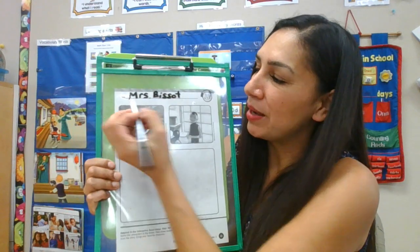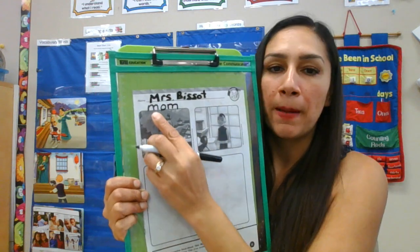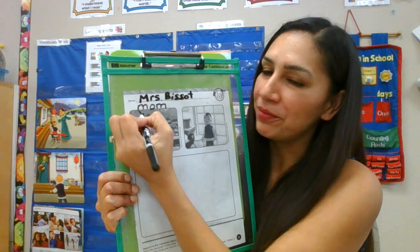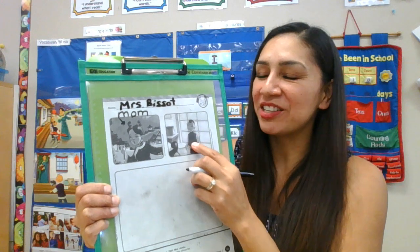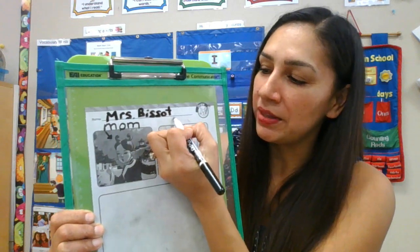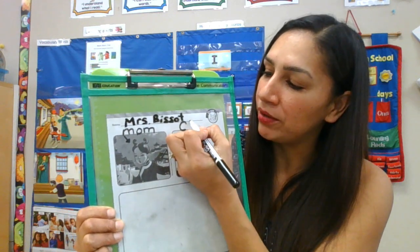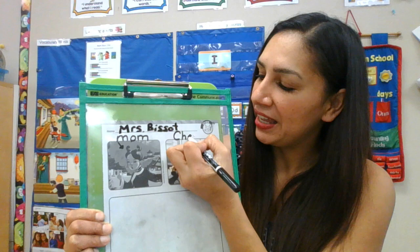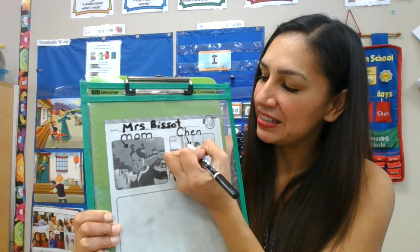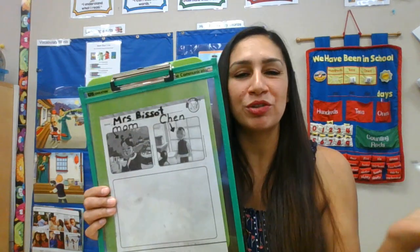I'm going to write right here: M-O-M. Mom. And I'm going to put a little arrow - Mom. That was the mom in the story. And this was Chen. Chen starts with a capital C because it's his name. Remember, we said at the beginning of names, you always make a capital letter. So capital C, and then I'm going to make the rest lowercase - C-H-E-N. That's Chen. So we have the characters here: Mom and Chen. Characters means who the story was about.